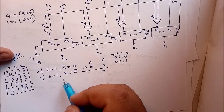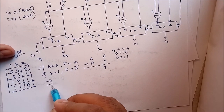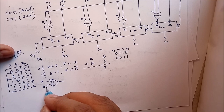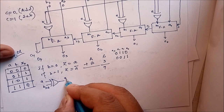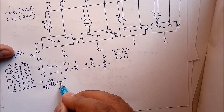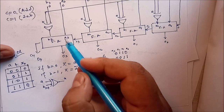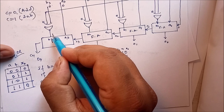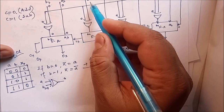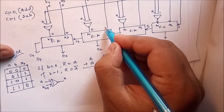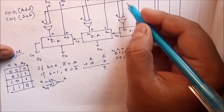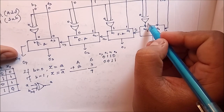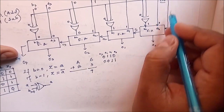Since c is 0, and looking at the XOR circuit: if one input is 0, the output is the same as the other input. So the XOR output passes b through unchanged — 0, 0, 1, 1. And since c is equal to 0, the carry-in is also 0.